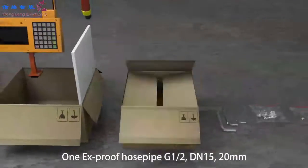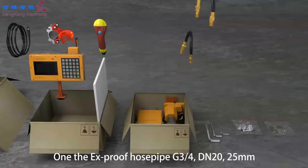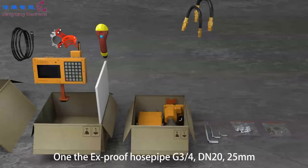One explosion-proof hose pipe G3/4, DN20, 25mm. One explosion-proof hose pipe G1/2, DN15, 20mm.